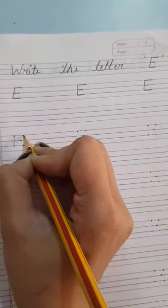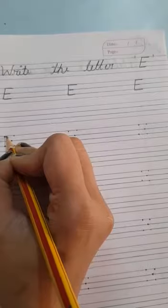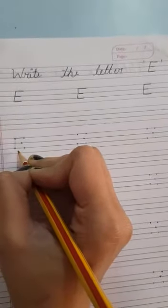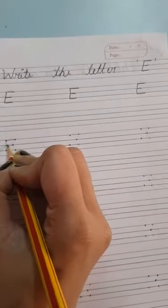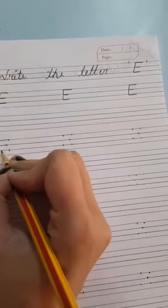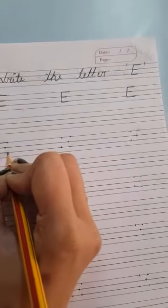Then, from this dot to this dot, we will make slipping line like this. Then, small slipping line. Then, another slipping line like this.